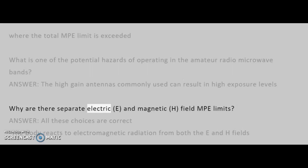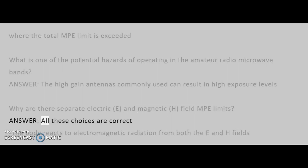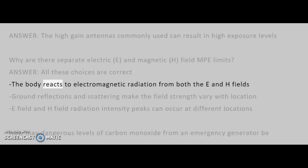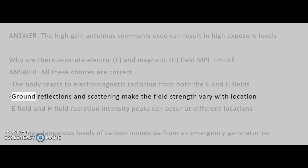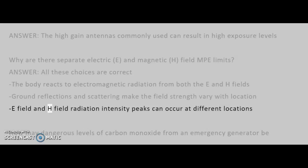Why are there separate electric (E) and magnetic (H) field MPE limits? Answer: All these choices are correct. The body reacts to electromagnetic radiation from both the E and H fields. Ground reflections and scattering make the field strength vary with location. E-field and H-field radiation intensity peaks can occur at different locations.